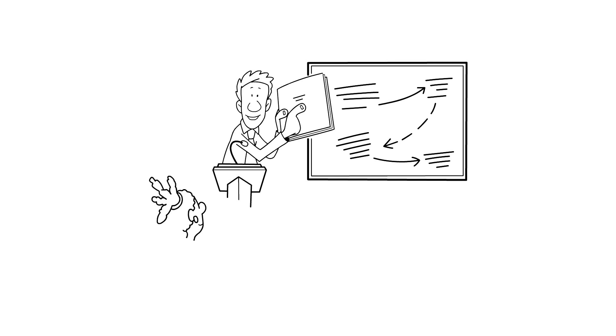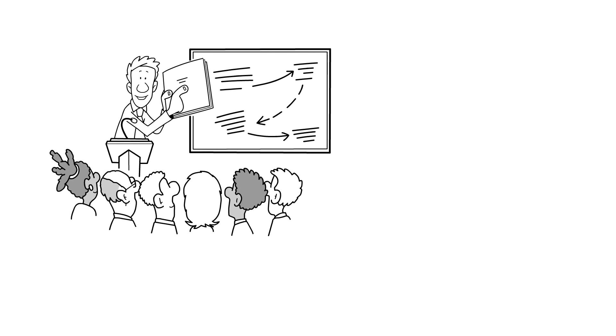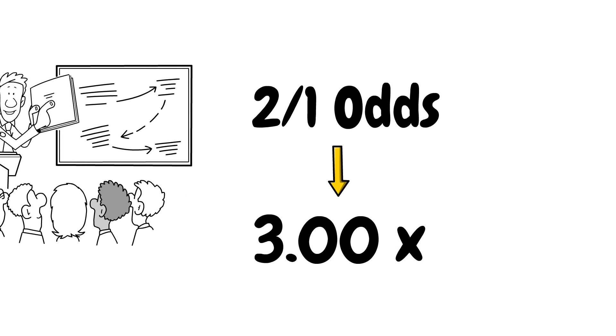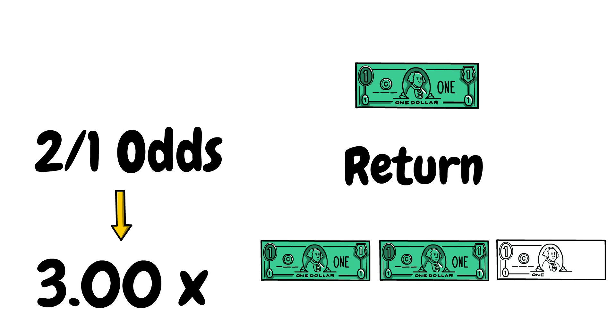To show you what I mean, let's convert this 2 to 1 payout into a decimal. Sports bettors will be familiar with this concept, but 2 to 1 odds can also be written as odds of 3x. In other words, the amount you bet multiplied by 3 is the amount that you will be returned. So if you were to bet $1 on a 3x, you would be returned $3. $1 is your original bet, $2 is your profit, aka 2 to 1 odds.